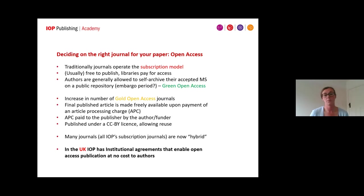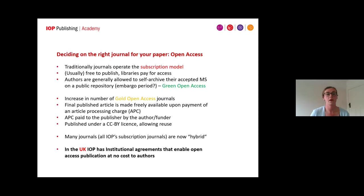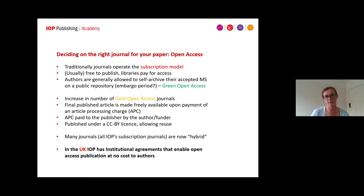There's also been an increase in the number of gold open access journals, and we've launched quite a few newer fully open access journals at IOP. Gold open access — often referred to as fully open access — is where the final published article is made freely available upon publication, subject to payment by either the author or their funding body. This is called an article processing charge, and once published, the paper is published under a CC BY licence which allows open reuse. Many IOP subscription journals are hybrid, meaning they also allow the option of publishing fully open access.